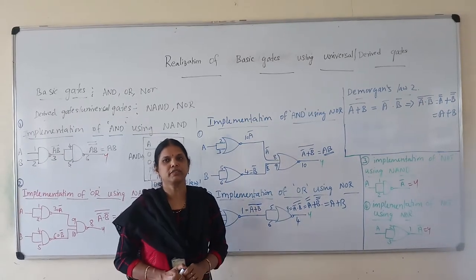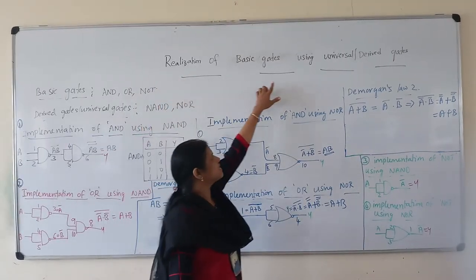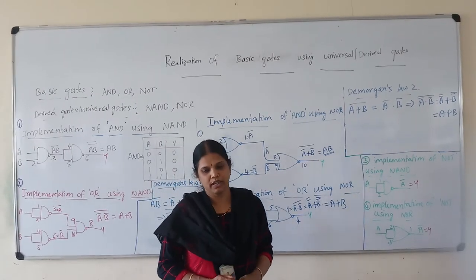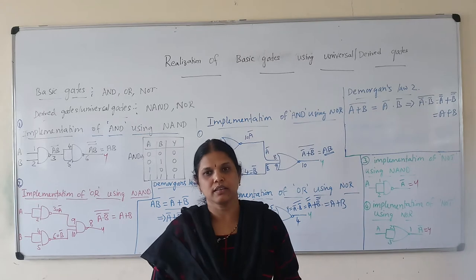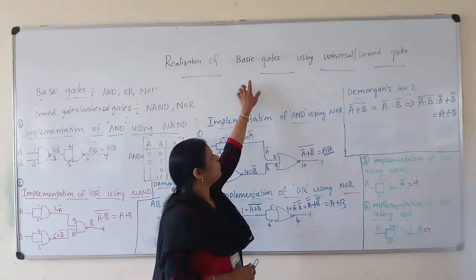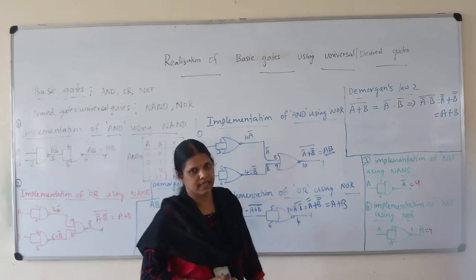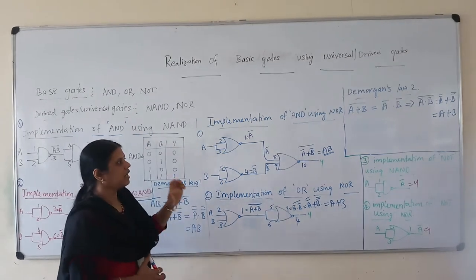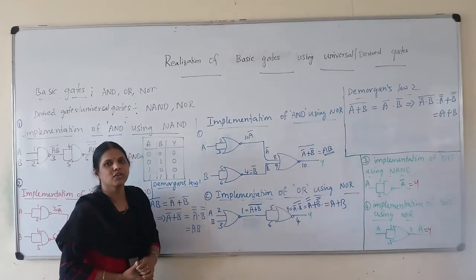Good morning students. Today we will discuss another concept called the realization of basic gates using universal or derived gates. We have already discussed the NAND as well as NOR functionality using the trainer kit. Here we will discuss why NAND and NOR are called universal gates — because by using these gates we can derive or implement the functionality of basic gates like AND and OR. Therefore they are called universal gates.